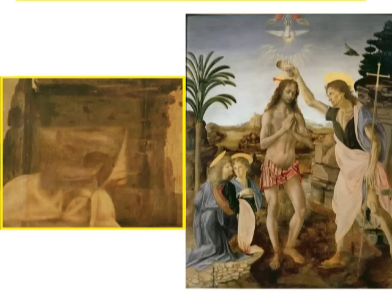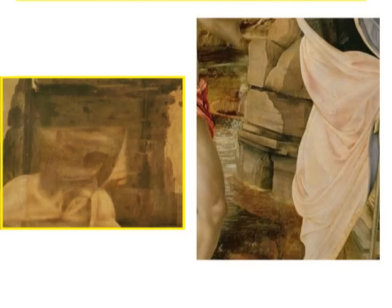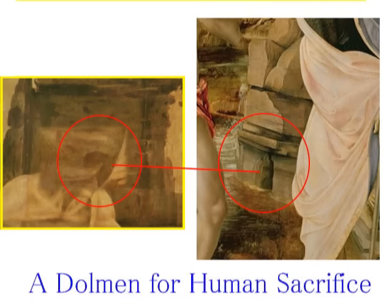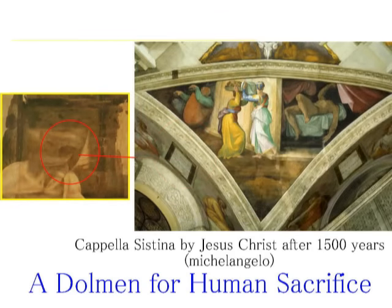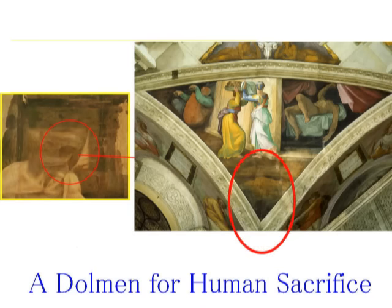1500年後のイエス・キリストは穴あきドルメンにこだわっていました。ヴェロッキオとダ・ヴィンチの合作と言われているイエスの洗礼の絵の中にも、穴あきドルメンが描かれています。半分水の中に沈んでいます。さらに、1500年後のイエス・キリストはミケランジェロなる操り人形芸術家を通して、システィーナ礼拝堂の天井画の中にも同様の穴あきドルメンを描きました。